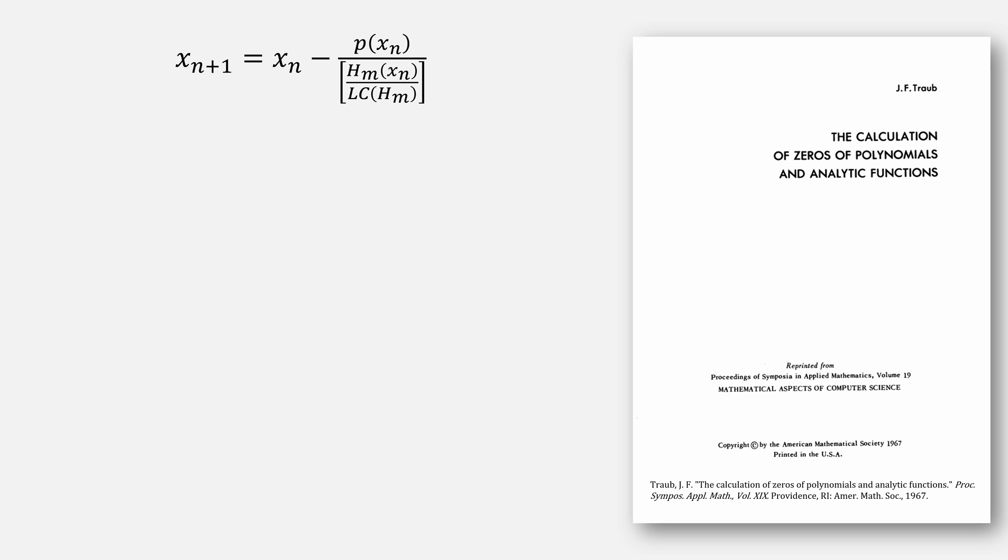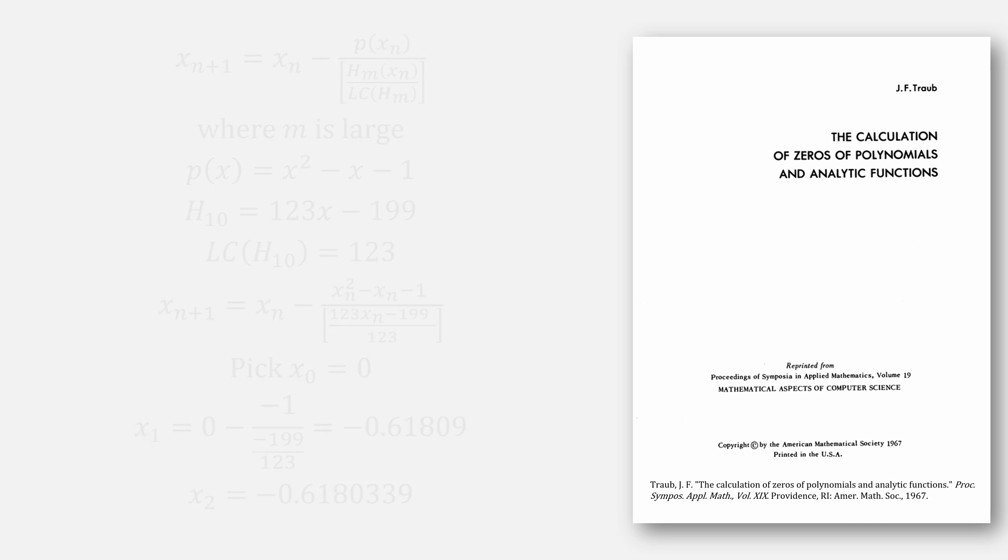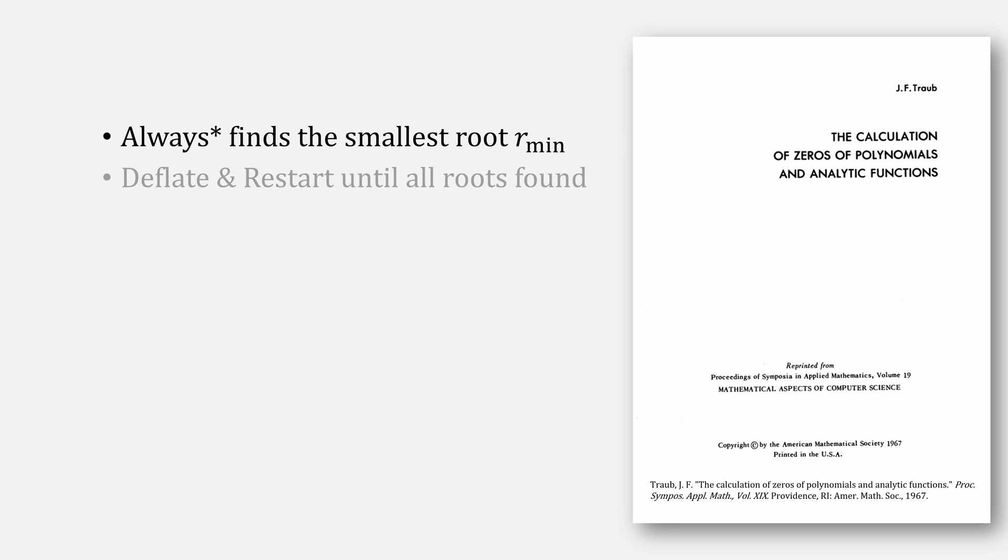The process is much the same as we did for our earlier method, except replacing now with our h polynomial, and again we're assuming m is a large term. For our example again, h sub 10 of x squared minus x minus 1, h sub 10 is 123x minus 199. Our leading coefficient is 123, and plug everything in to update our form. Pick a starting value for x, it really doesn't matter where you start, let's just pick 0. Our next value for x is negative 0.618, and it converges after the next iteration. We'll also always find our smallest root. Once you do, deflate and restart until you've found all of the roots.